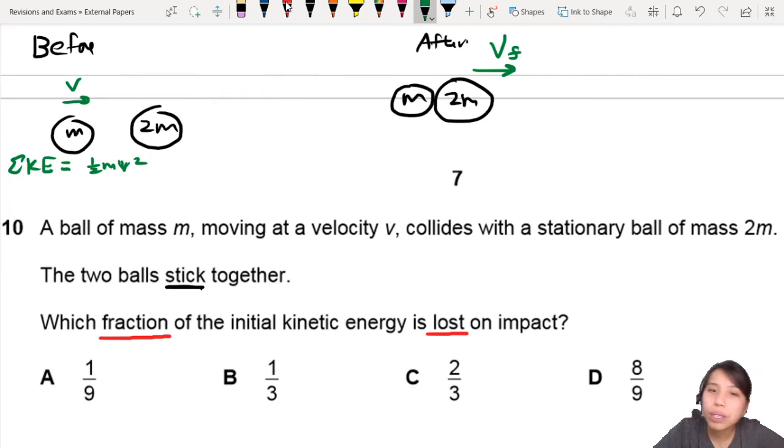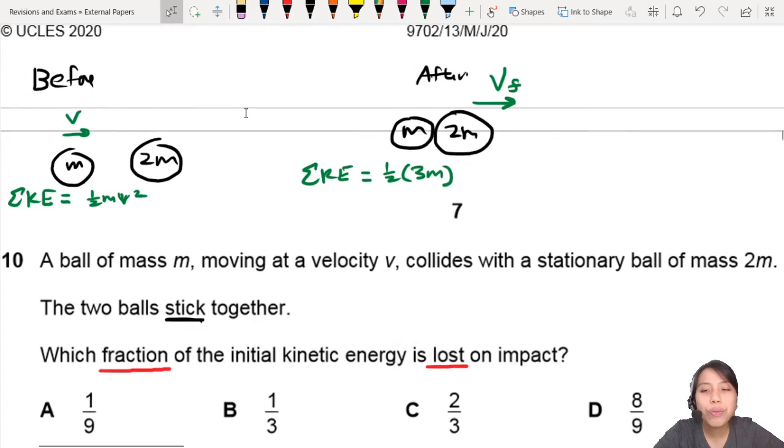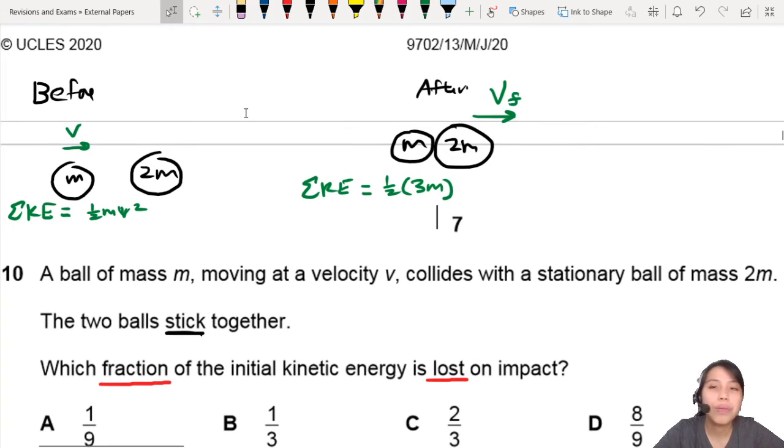What about after collision? So after collision, you have two balls. So half total mass is 3M. But what is the final velocity? We don't know that. So we need to find what VF is in terms of V.